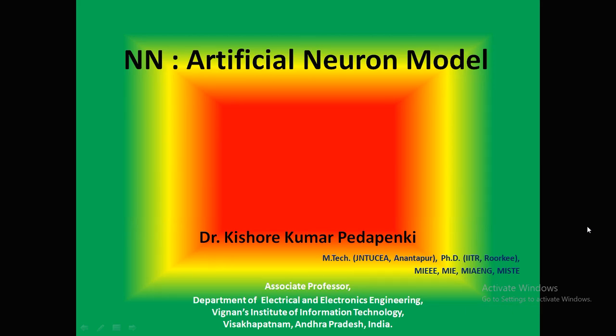Hi friends, today let us learn the artificial neuron model. After finishing off the difference between humans and computers, and the biological neuron structure and its operation, we now move to the artificial neuron. In this lecture we will discuss in detail the various parts of the artificial neuron and how the operation will be performed based on proper mathematical equations.